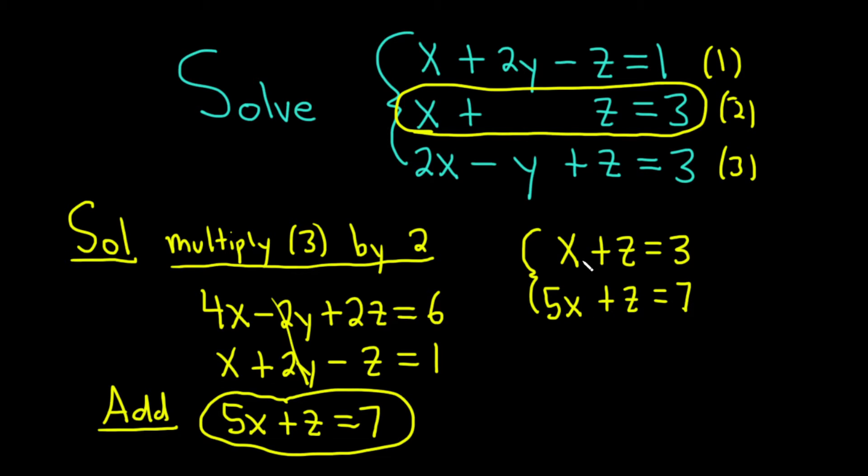And so now we can get rid of the z. If we multiply this first equation by negative 1, we would get minus x minus z equals minus 3. Just writing it down here, just flipping the signs. And now we can add these. So we get 4x. These go away. And then 7 plus negative 3 is 4.